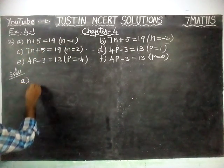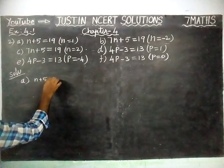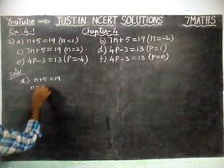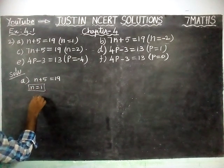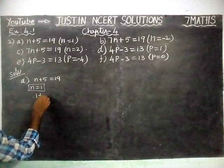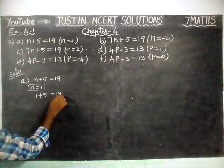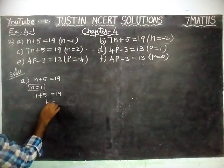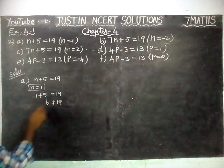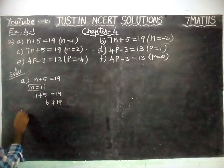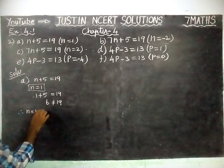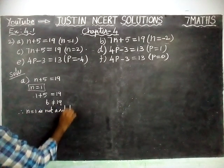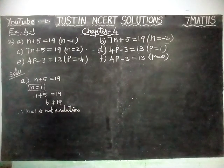The first question, option A: N plus 5 is equal to 19. We are going to substitute N equal to 1. When we substitute, 1 plus 5 is equal to 6. This is not equal to 19. Therefore, N equal to 1 is not a solution for the given equation.